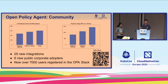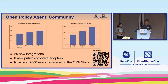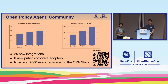We also have six new public corporate adopters on the adopters page. If you're using OPA and you're not in the adopters file, please open a pull request and get your name on there. We've also got loads of people using Slack — the QR code at the bottom of the screen will take you to sign up. We've got a Gatekeeper channel for queries related to Gatekeeper, and colleagues are regularly answering questions there.